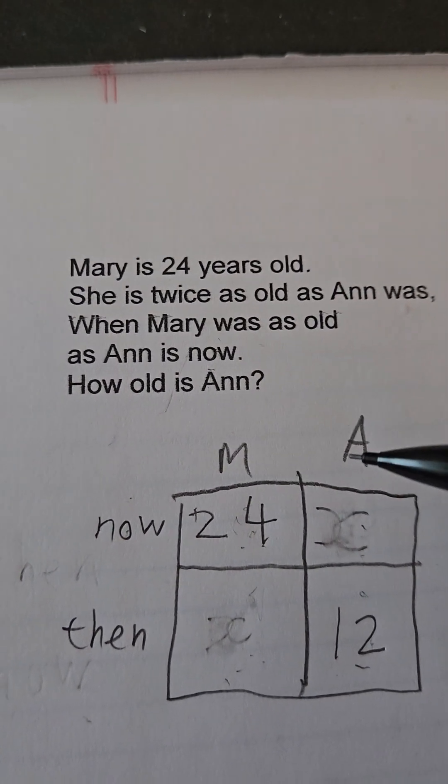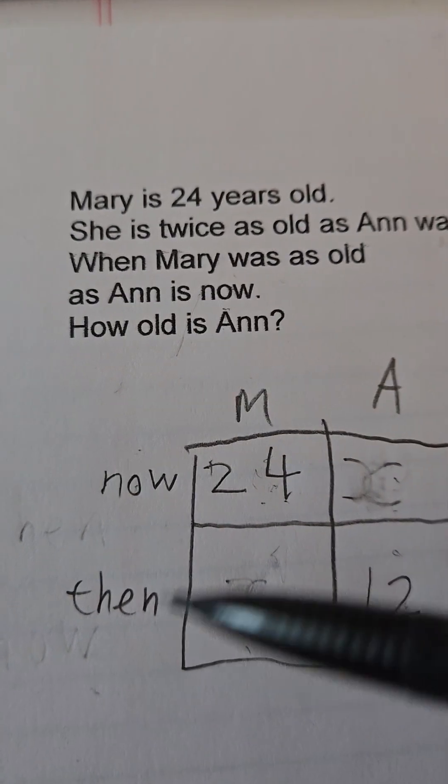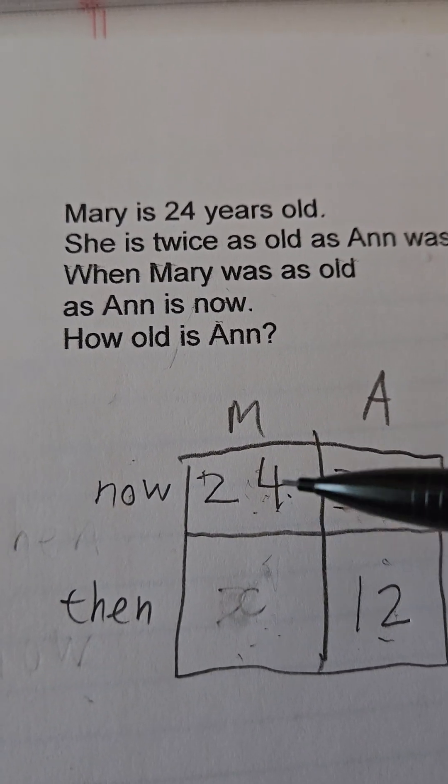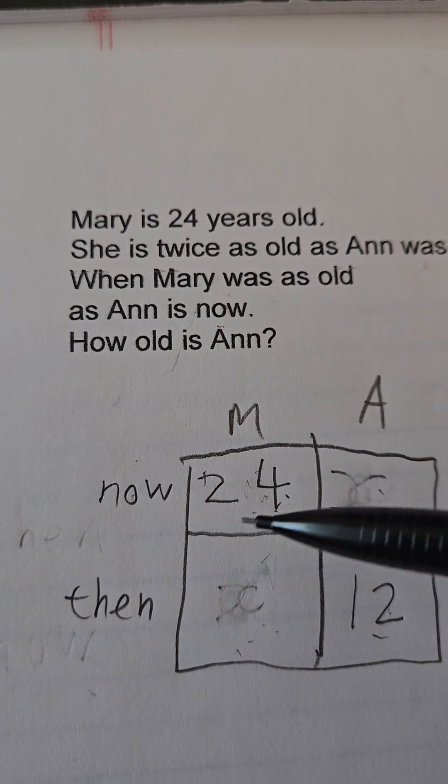M is Mary, A is Anne. And this is now and that's then. One thing is factual: Mary is 24. That's not even relative or possibly.